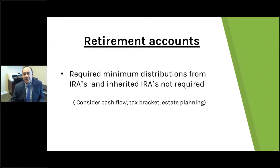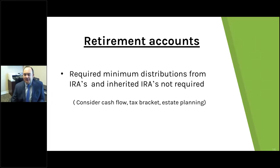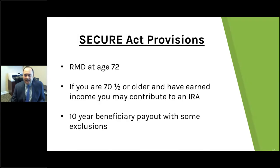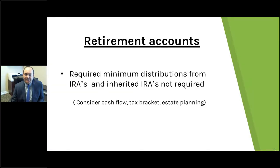Also, if you already took your required minimum distribution, it may be possible to undo it — roll it back into your retirement account. If the distribution was taken on February 1st or later, it can potentially be rolled back all the way until July 15th. However, if you were directly impacted by COVID-19 — you, your spouse, or a dependent — it's possible it could be rolled in within the next three years. As you make this decision with your team, it's also important to consider it in the context of the current tax environment.